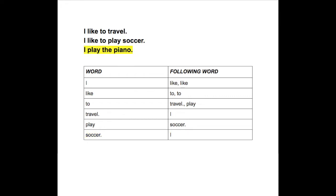And now let's train it on the last sentence. The final state of our data structure looks like this. Now that we've trained our computer, if I asked it to make a sentence starting with the word 'I,' it could look at all the possible words that could follow 'I,' choose one, then look at all the words that follow that word, choose one, and so on.